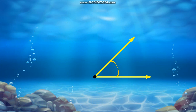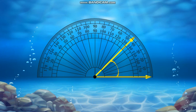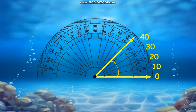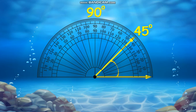Let's start with the first type. Using the protractor, we will measure the degrees of this angle — from 0 to 10, 20, 30, 40, and at 45 the ray is focused. That means this angle measures 45 degrees. Since 45 is less than 90, this is called an acute angle — an angle whose measure is less than 90 degrees.